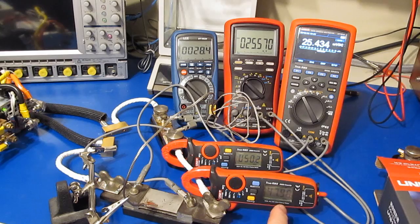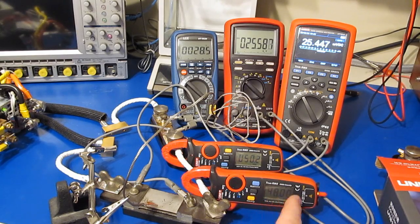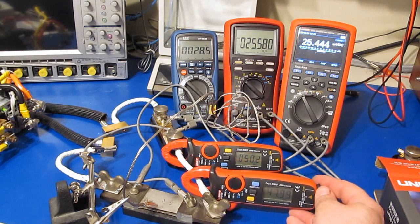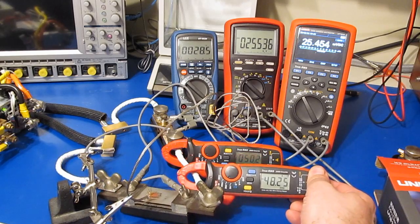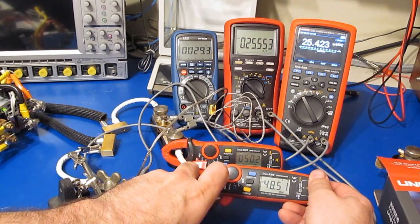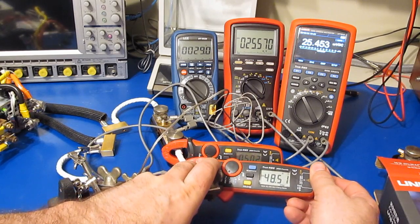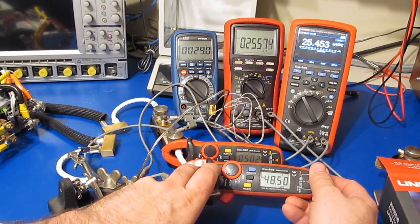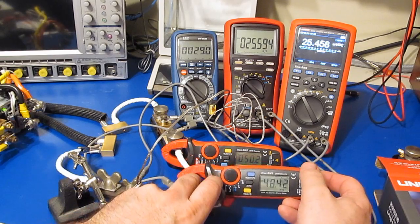And you can see again in the middle range we are reading roughly 48.5 amps or so. There you go. It looks like 48.5 amps. It's a little bit on the low side again.